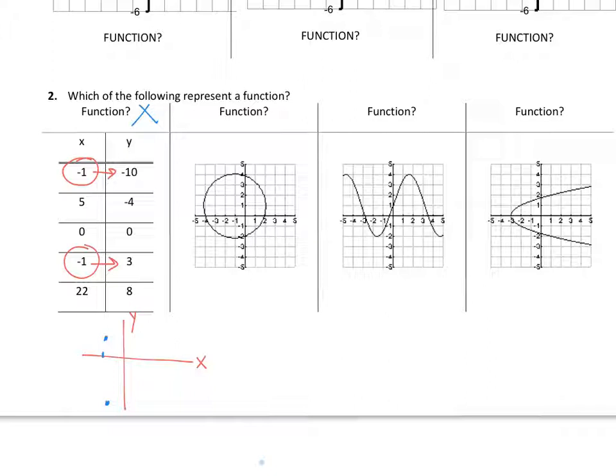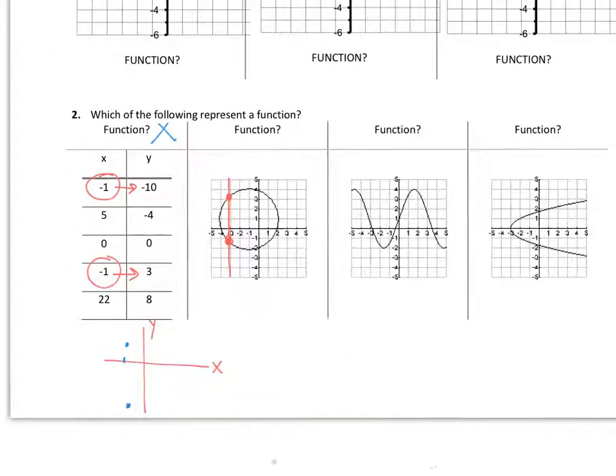The second one, if I try to do a vertical line, again, I can find spots, in fact, many spots, where the vertical line's going to cross two places. If x is negative 3, you can see I have two places, two different values of y. So this also is not a function. Not a function.